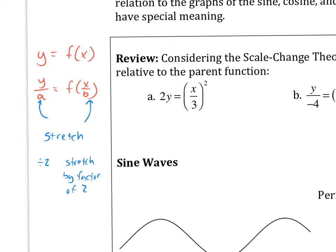In this case right here, the divide by 3 is a horizontal stretch — it gets pulled left and right. So originally it's a parabola like this, but now it gets pulled like this; it opens up wider.